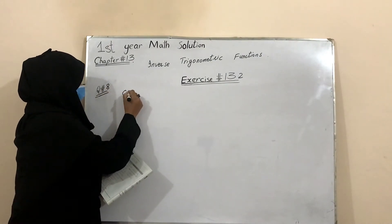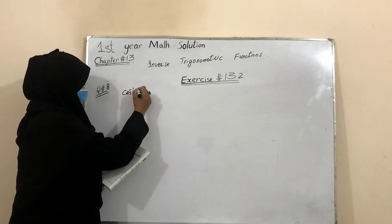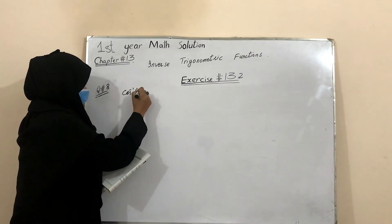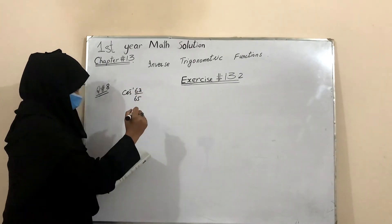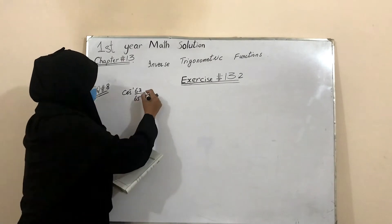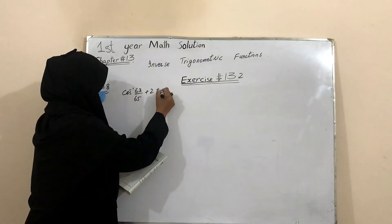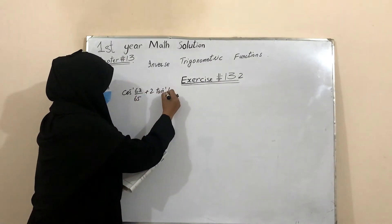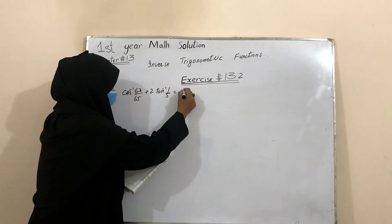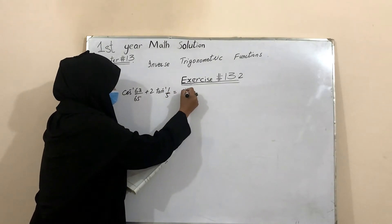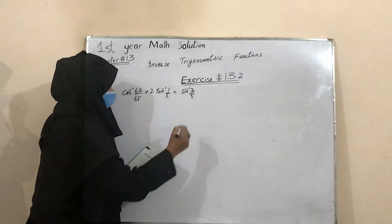We are proving: cos⁻¹(63/65) + 2·tan⁻¹(1/5) = sin⁻¹(3/5).